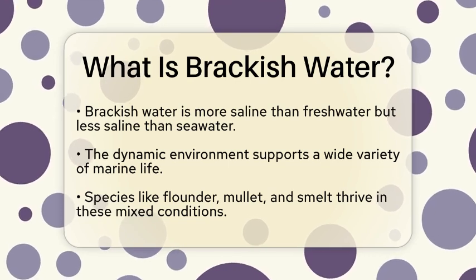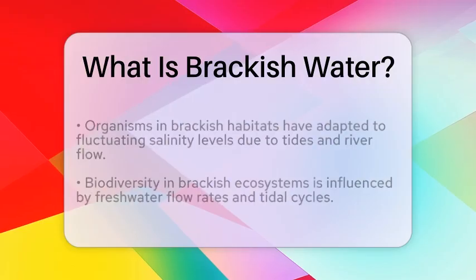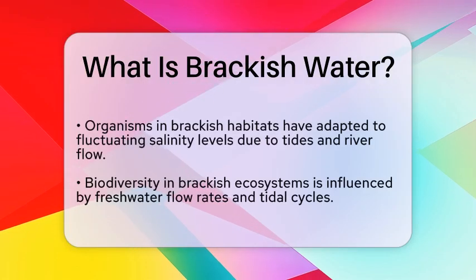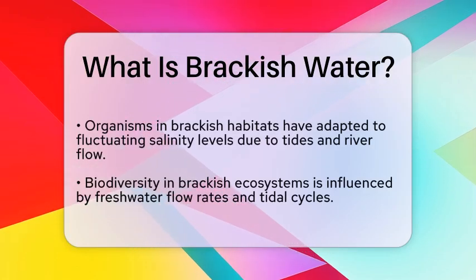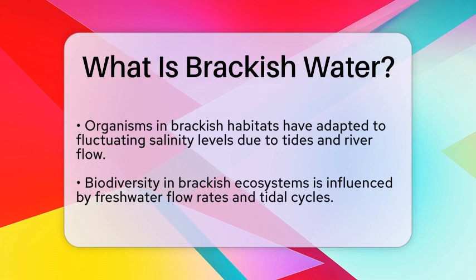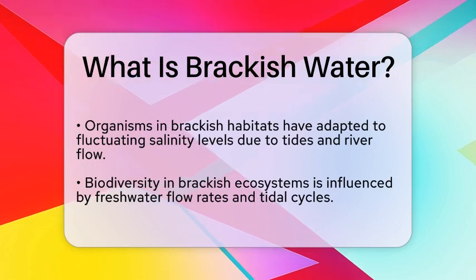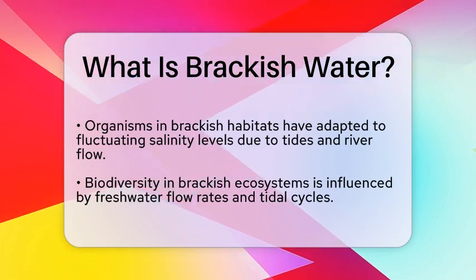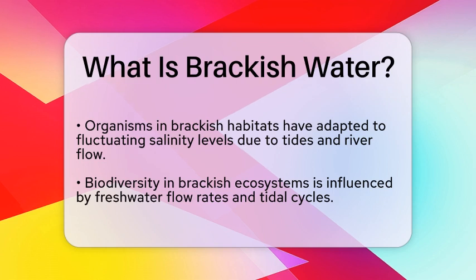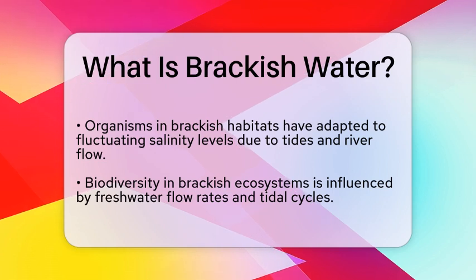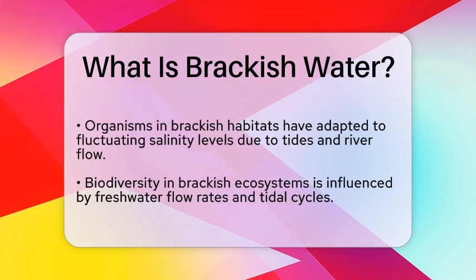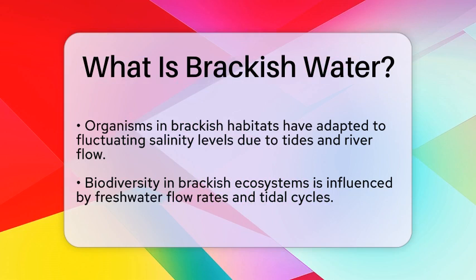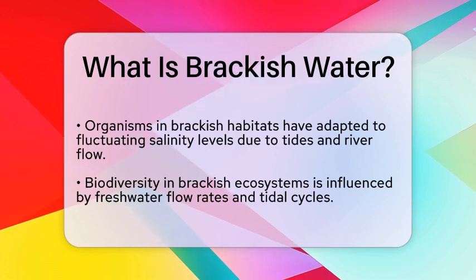The biodiversity found in brackish water ecosystems is influenced by several factors. The flow rate of freshwater into these areas and the tidal cycles play significant roles in determining the types of species that can survive there. This creates a rich habitat that is essential for many aquatic organisms.